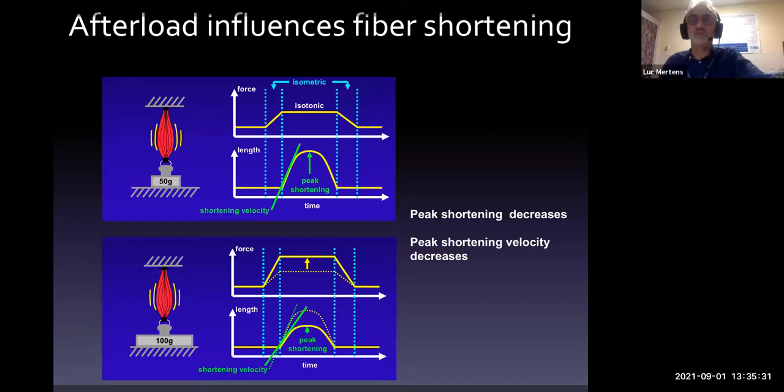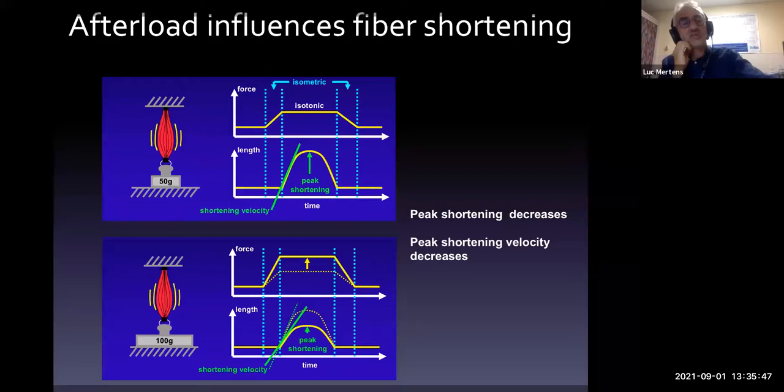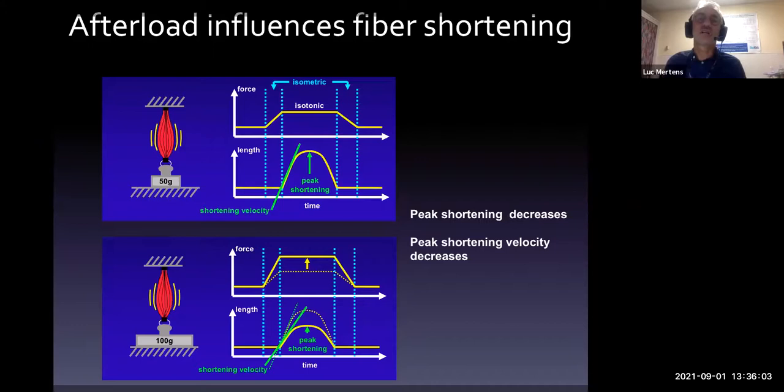An important concept, especially in the neonatal heart, is sensitivity to loading conditions. The neonatal heart has an underdeveloped sarcoplasmic reticulum and immature calcium cycling metabolism, resulting in more sensitivity to loading conditions. Afterload is a very commonly used term, but you have to understand where it comes from — it originates from isolated muscle strip experiments, where the muscle strip shortens against a load after starting contraction. That is why we call it afterload.